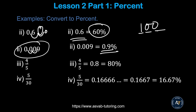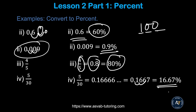For fractions: four over five equals 0.8 as a decimal; move two decimal places to get 80 percent. Three over 50 equals 0.1666 repeating; move two decimal places to get approximately 16.67 percent.